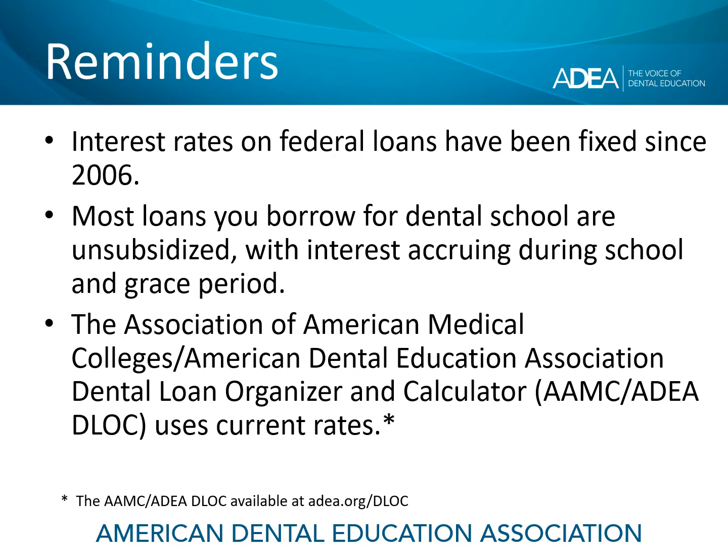We start with some important reminders. Up until 2006, interest rates on federal student loans were variable, but starting in 2006, the rate structure changed on federal loans. Now any interest rate that you get on your direct unsubsidized or direct plus loan will be fixed for the life of the loan. It will never change.